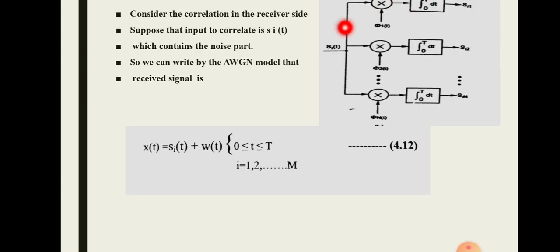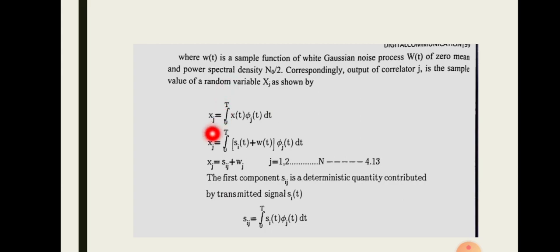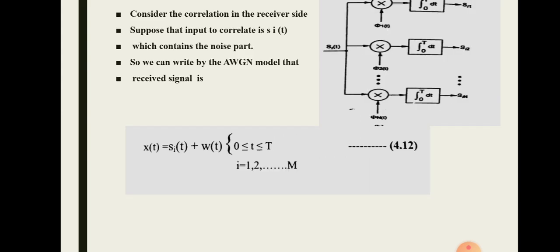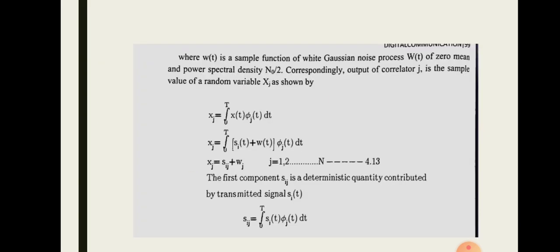For the correlator output, the formula is: Xj = integral from 0 to T of x(t) · φj(t) dt, where x(t) is the received signal and φj(t) is the orthonormal basis function. Since x(t) = si(t) + w(t), we substitute for x(t), so Xj = integral of [si(t) + w(t)] · φj(t) dt.